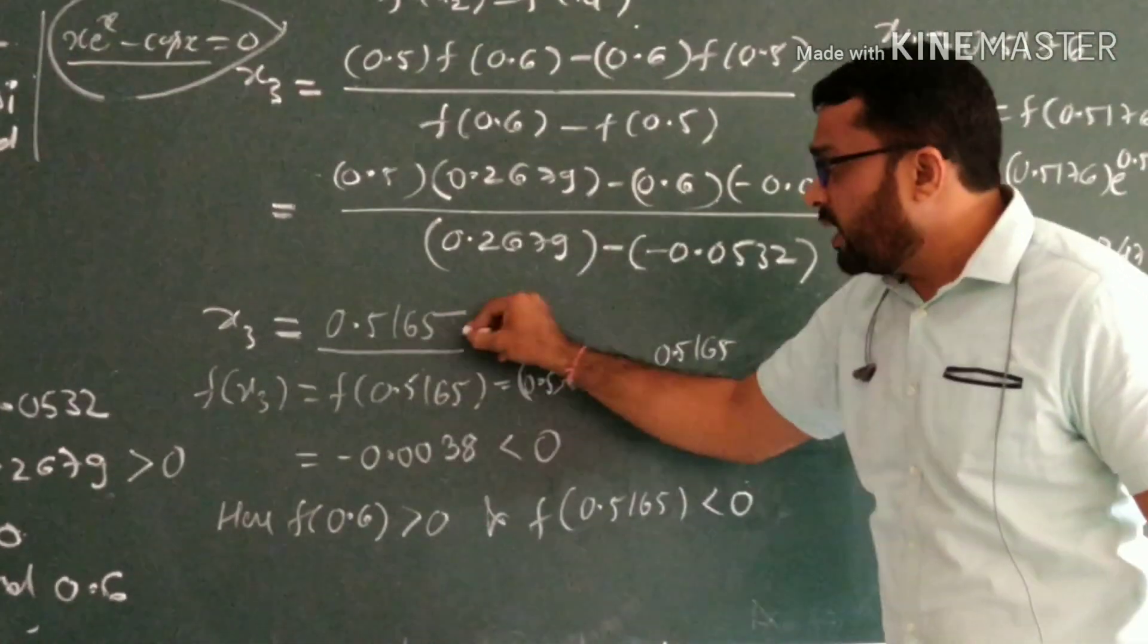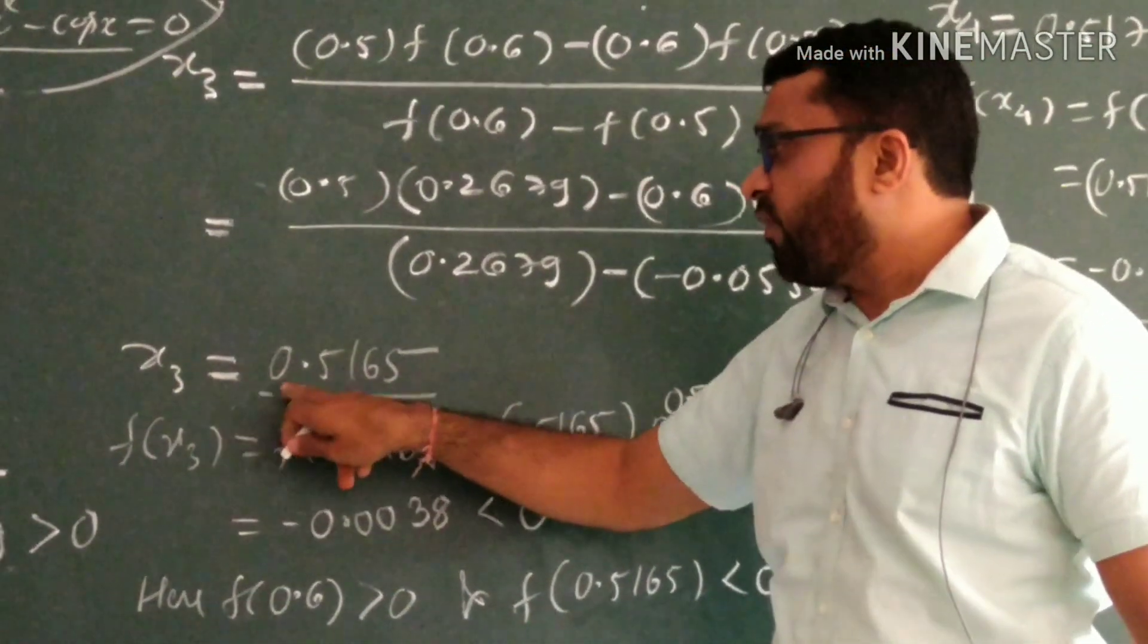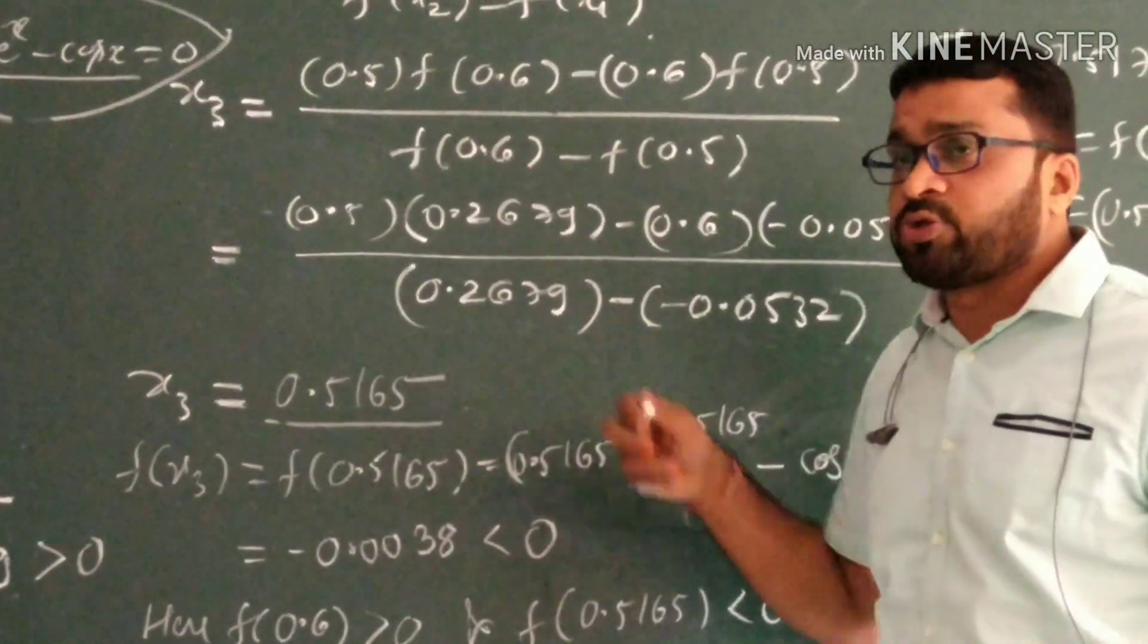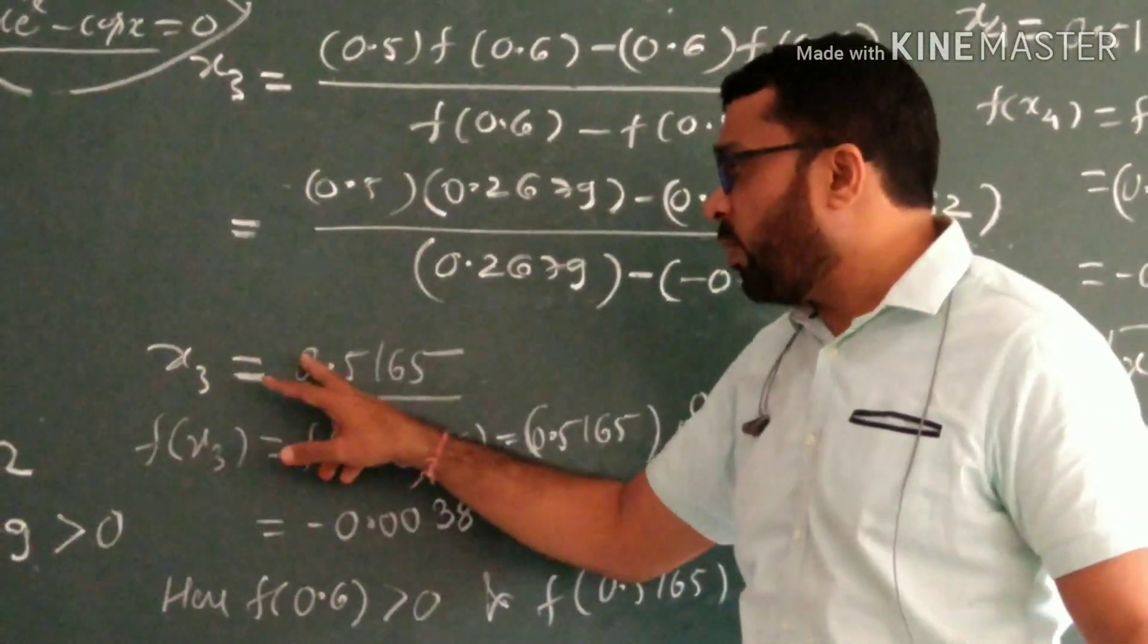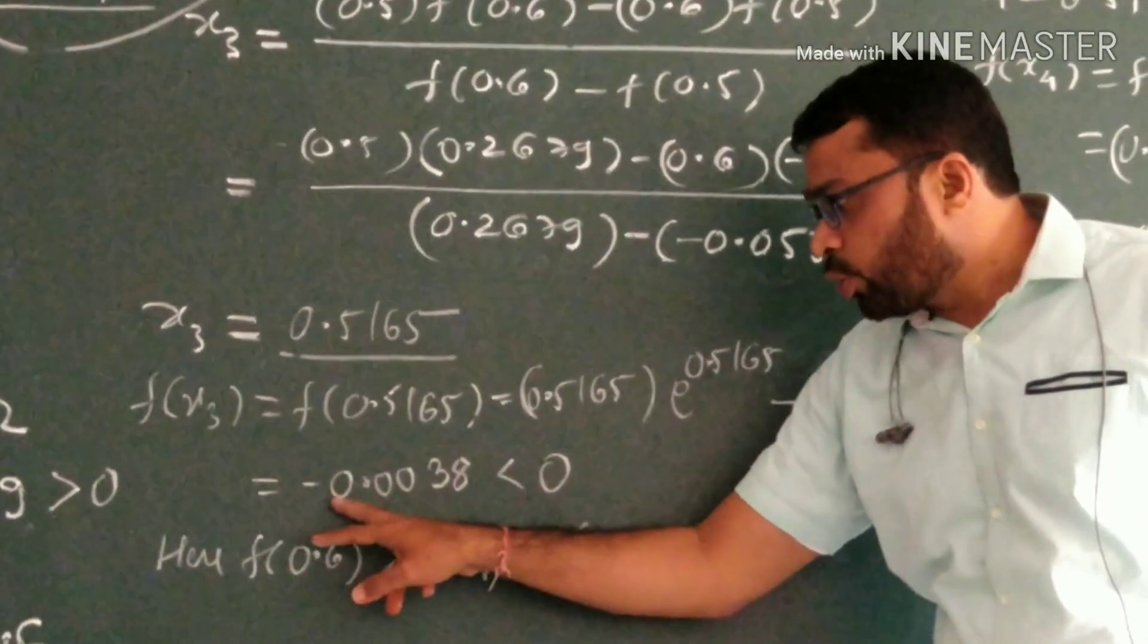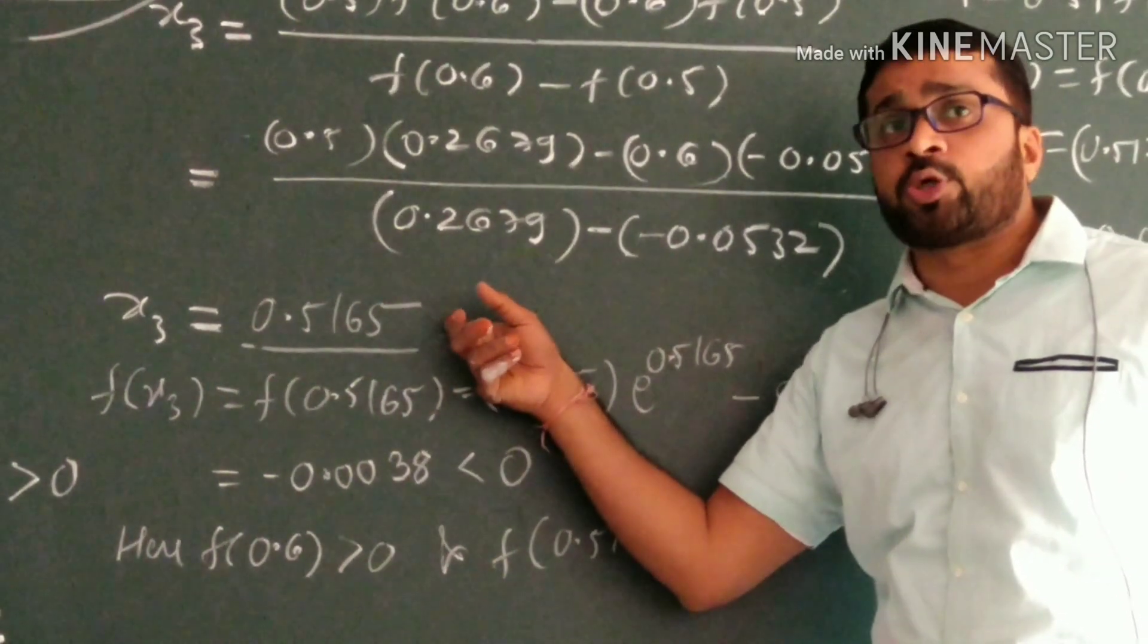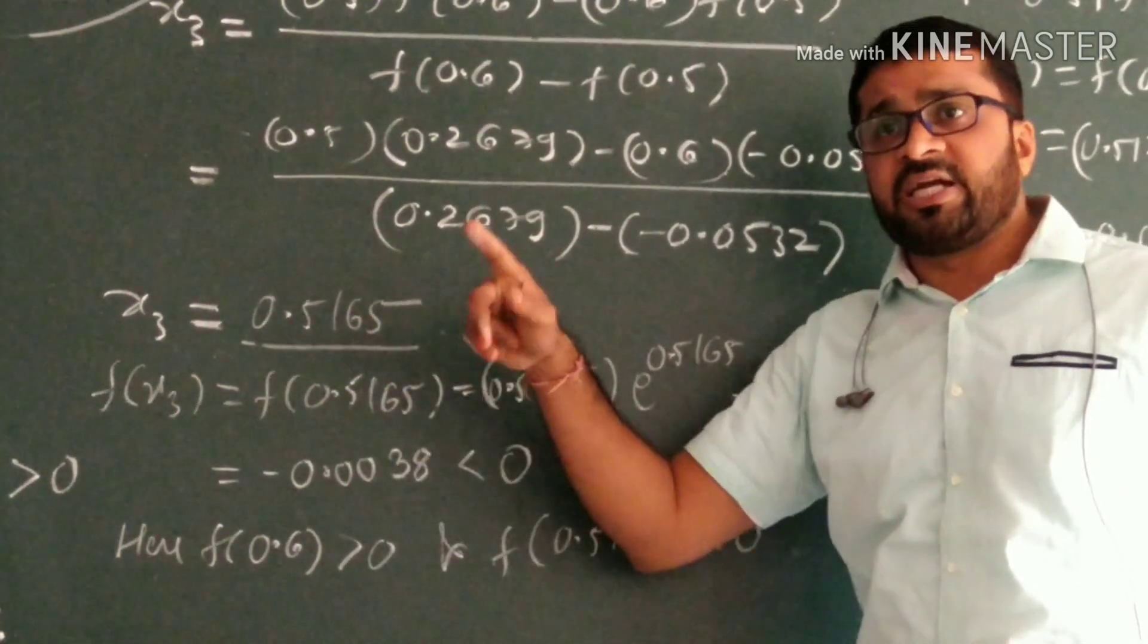So the answer for the root will be 0.5165. And now we check the function value at 0.5165, it is coming out to be -0.0038. So this root is correct up to 2 decimal places, but we will go to 3 decimal places.